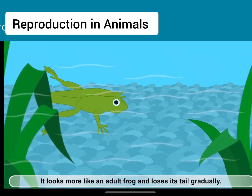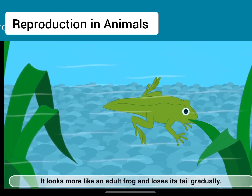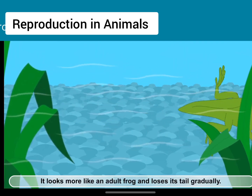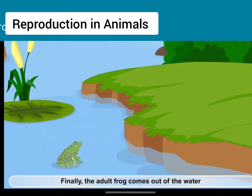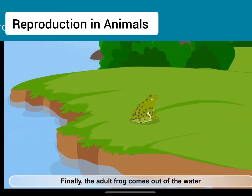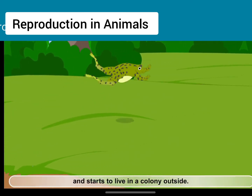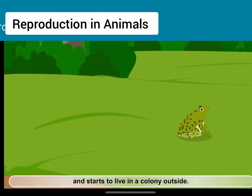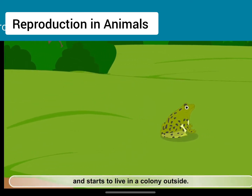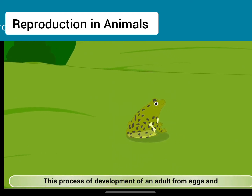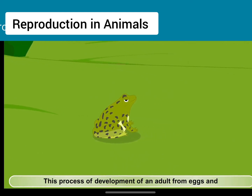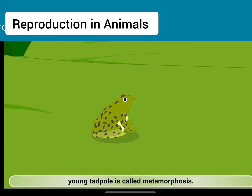It develops feet similar to an adult frog. It looks more like an adult frog and loses its tail gradually. Finally, the adult frog comes out of the water and starts to live in a colony outside. This process of development of an adult from eggs and young tadpoles is called metamorphosis.